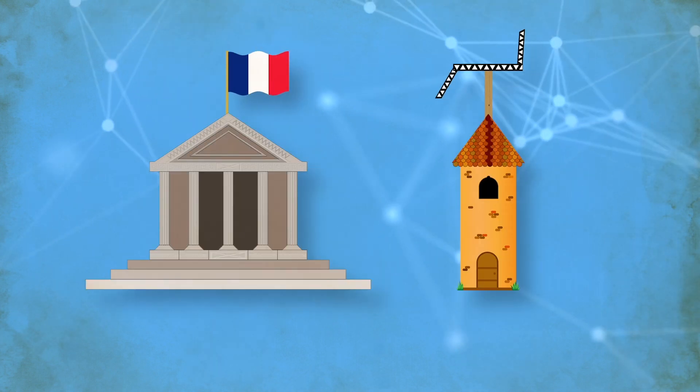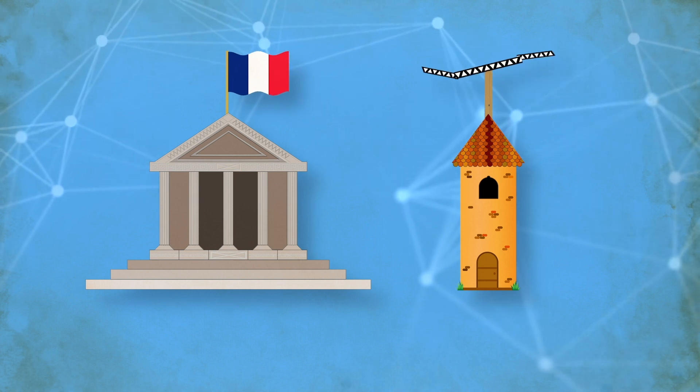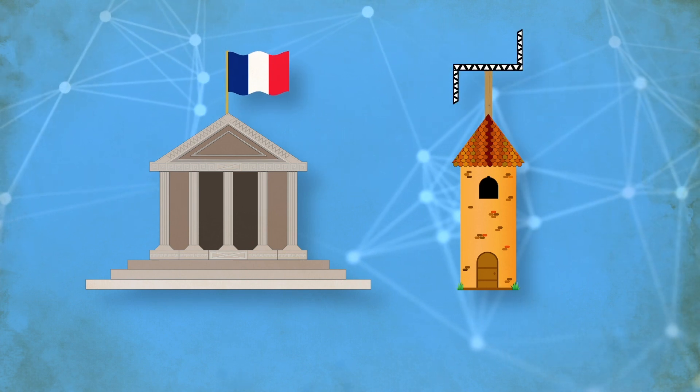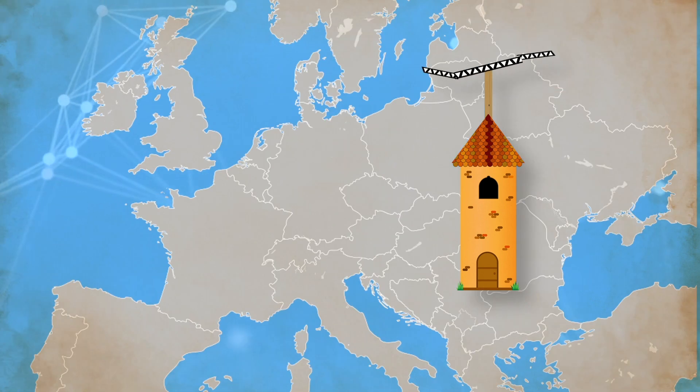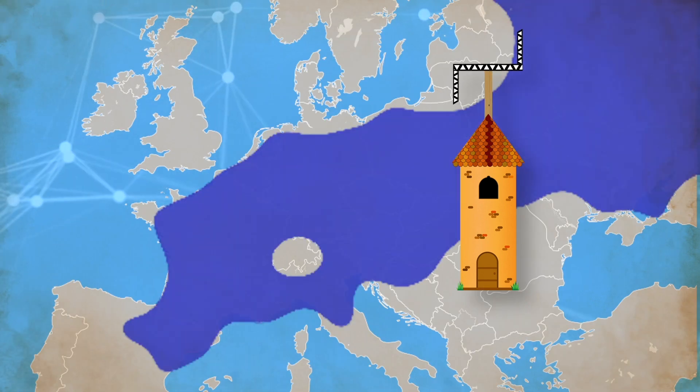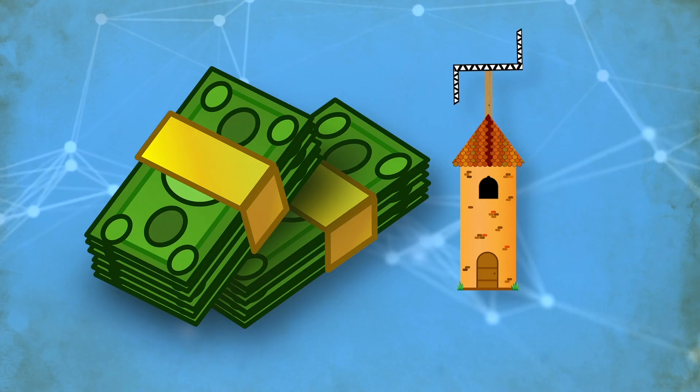For its entire existence, Schaap's telegraph system was used exclusively by the French government. But the network itself could be used for more than just snuffing out royalist sympathizers and conquering much of the European continent. No, it could be used for so much more. Like making money.